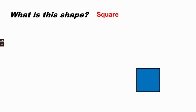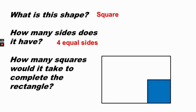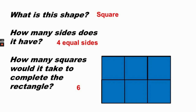What is this shape? A square. A square has four equal sides. How many squares would it take to complete the rectangle? It would take six squares to complete the rectangle.